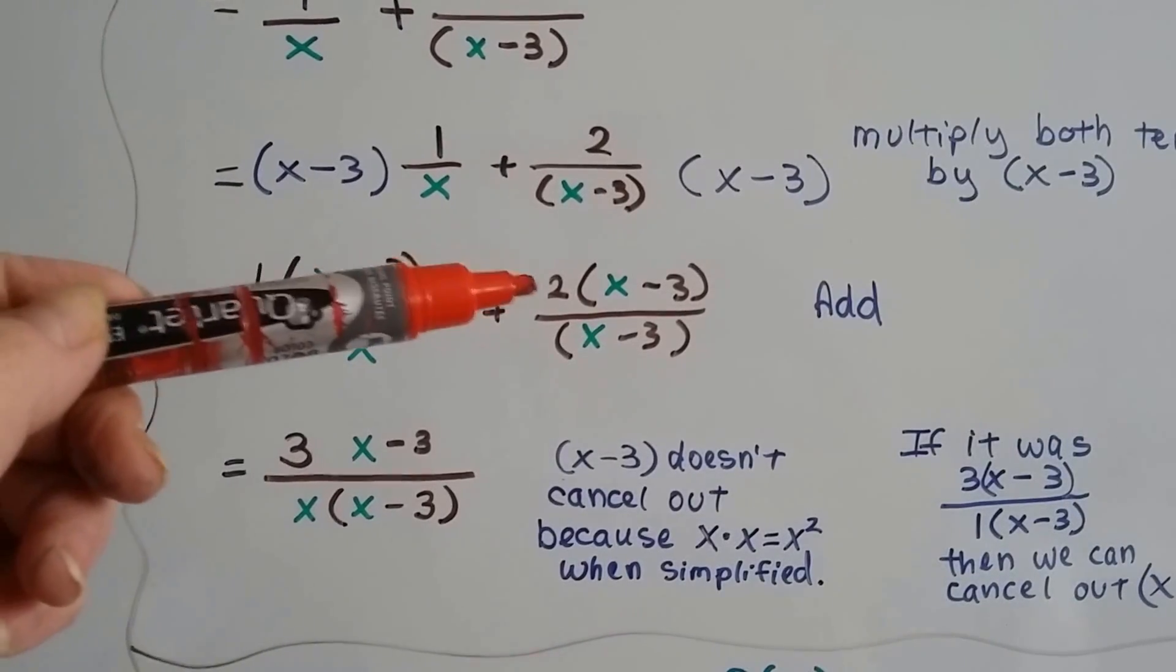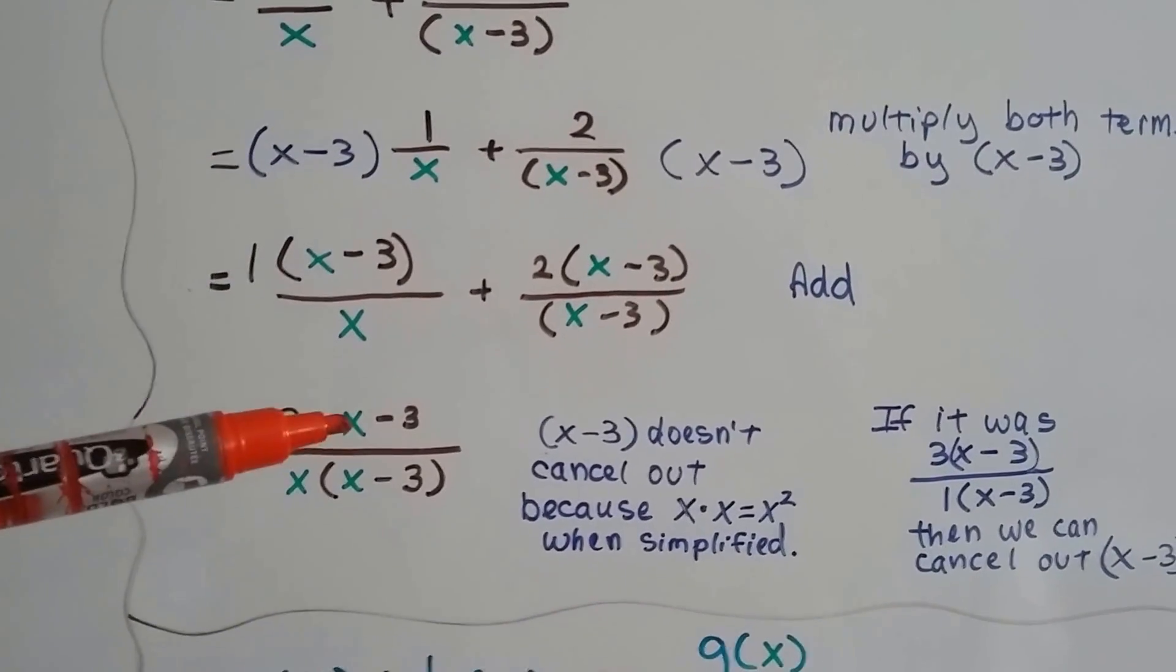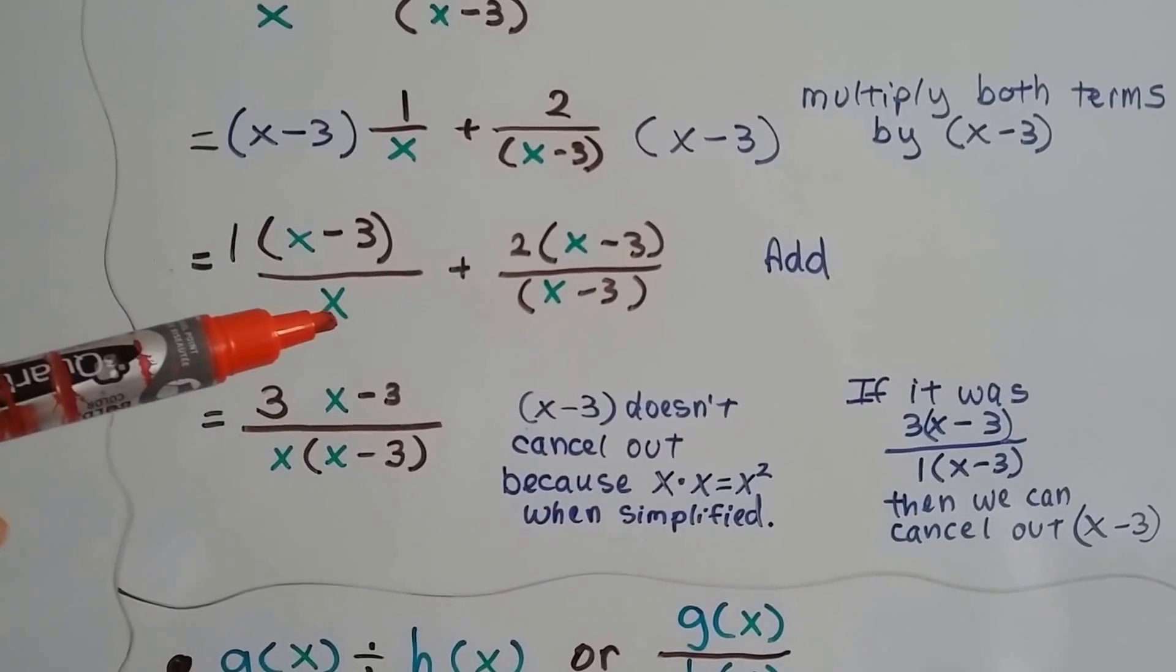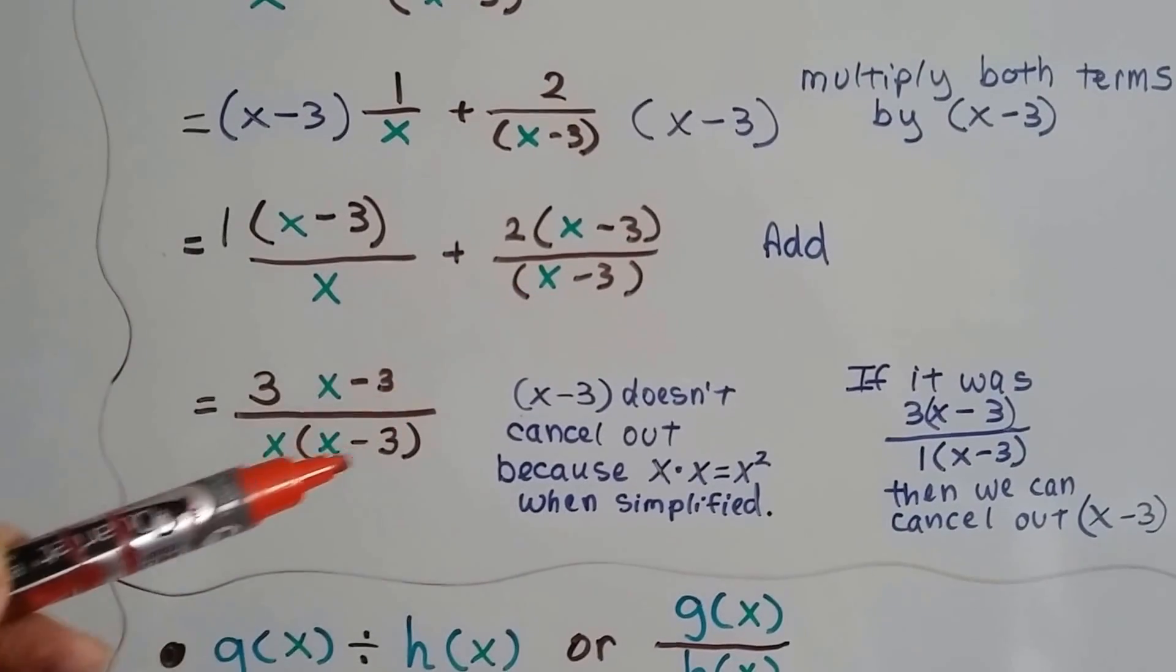1 and the 2 makes 3x minus 3, and this makes x times x minus 3.